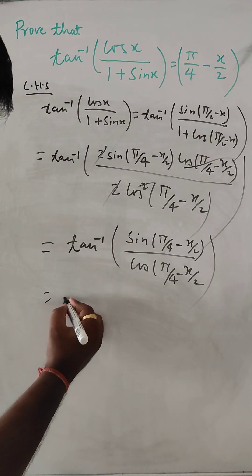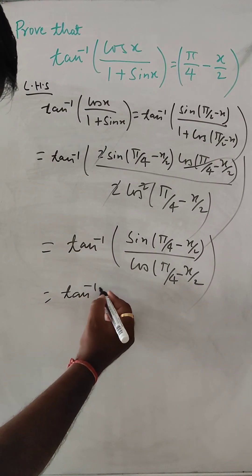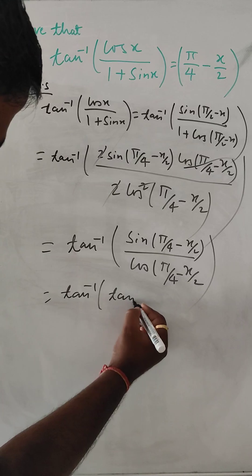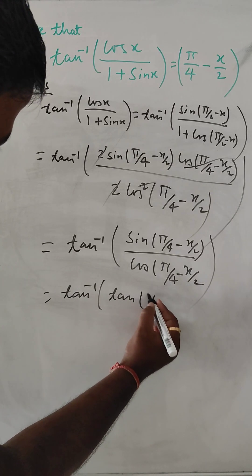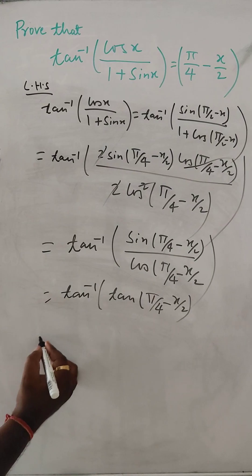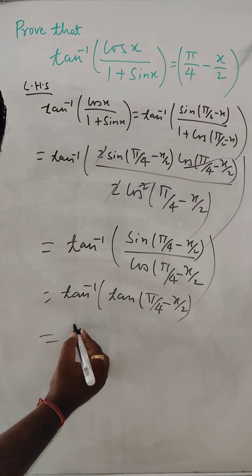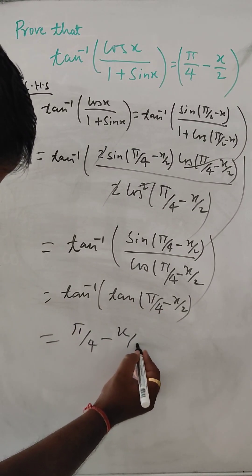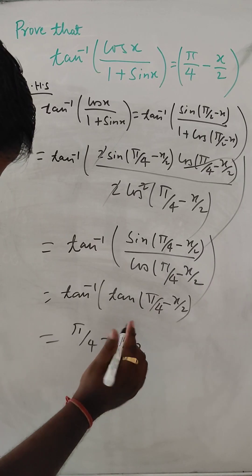So, this is nothing but tan, correct, tan inverse. This is tan pi by 4 minus x by 2.